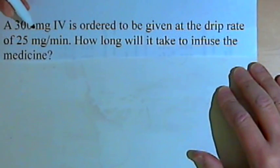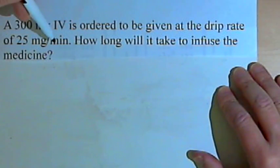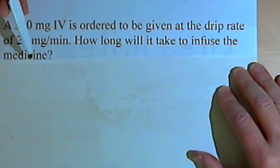The problem says a 300 mg IV is ordered to be given at the drip rate of 25 mg per minute. How long will it take to infuse the medicine?